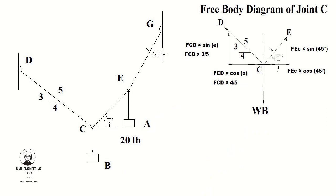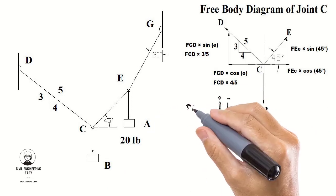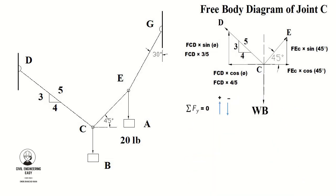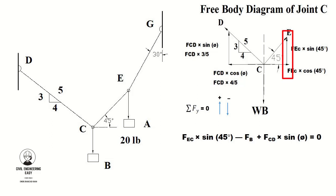Finally, to find the unknown weight B, use the equilibrium equation ΣFy = 0 at joint C. Take vertical upward forces as positive and downward forces as negative. The force FEC × sin(45°) acts upward — take it as positive. The unknown weight B acts downward — take it as negative. The force FCD × sin(θ) acts upward — take it as positive.